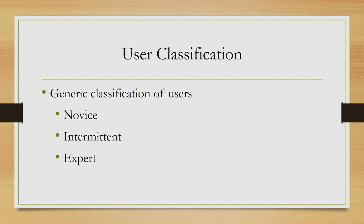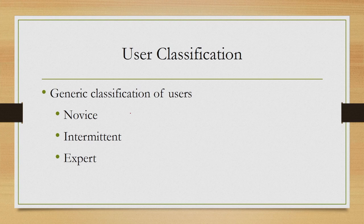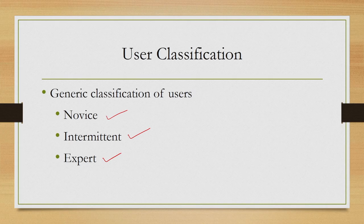We can start by classifying the user into categories. A very broad and simple categorization is a three-way categorization of users. Note that here by the term user we are not referring to technically sound users like a DBMS manager, but rather to layman users like travellers or travel agents who need not know about the technology behind. For such users we can divide them into three categories: novice, intermittent, and expert. With this knowledge we will be able to build systems that will be more acceptable to the particular user group.